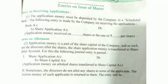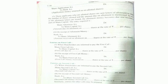Then the entry on allotment — what is to be done: first, the share application is transferred from Share Application Account to Share Capital Account. The entry will become: Share Application Account Dr. to Share Capital Account. That is the first entry when we receive the application money, and the second entry when we transfer to share capital.